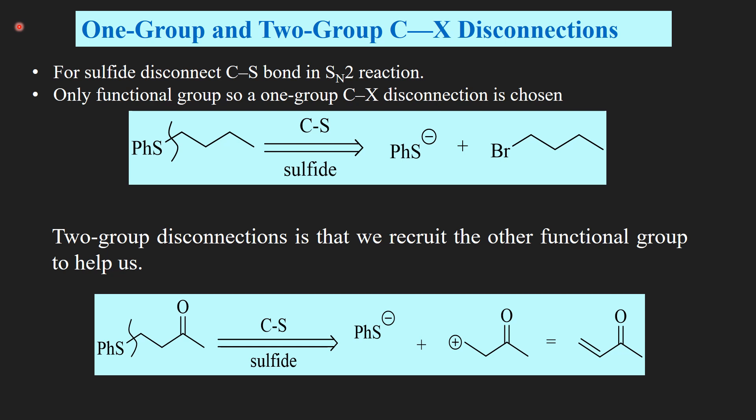First of all, what is one-group and two-group C-X disconnection? C-X disconnection means carbon and heteroatom disconnection. For a sulfide, the disconnection of carbon and sulfur bond is very easy in an SN2 reaction. Here we have only one option after C-X disconnection: sulfide is nucleophile and alkyl bromide behaves as an electrophile.